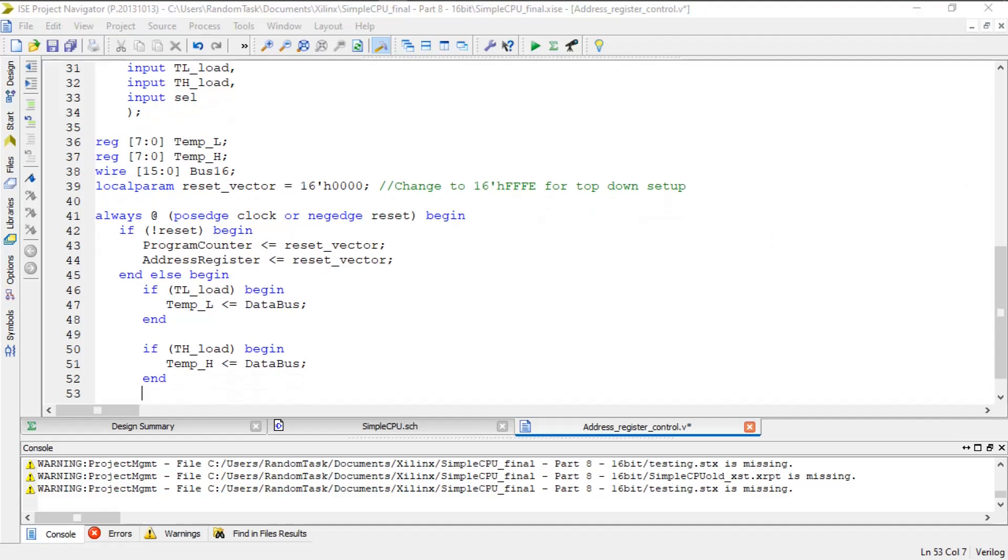If there is no reset, then there's been a clock pulse, so it checks the state of the control lines. If the TL load line is set, it loads the temp L register with the value on the data bus. The temp H register works the same. It is possible to load the same value into each register in one step this way.